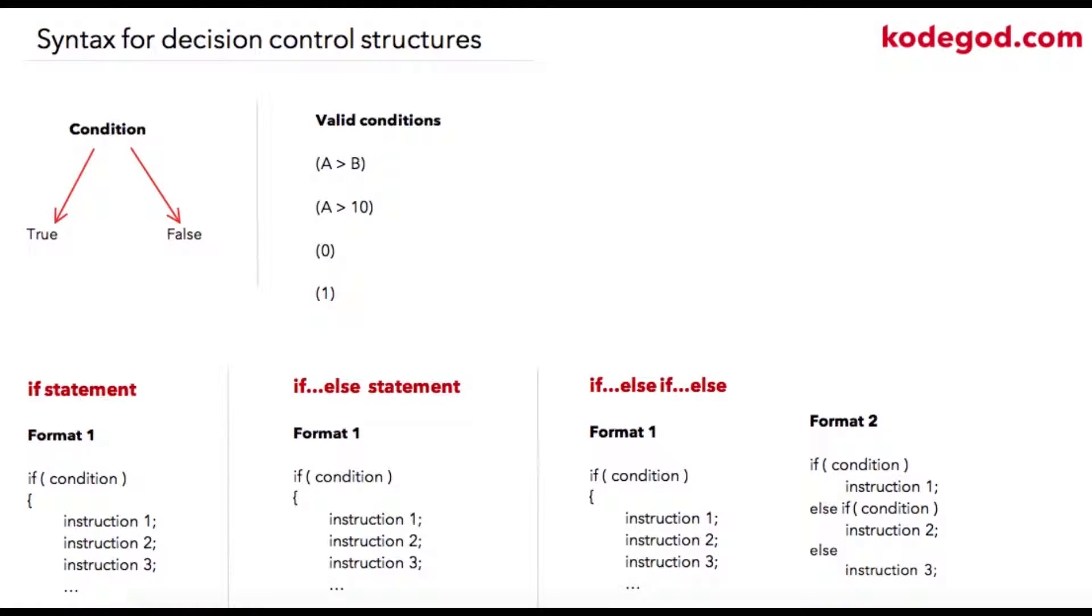In this lecture we are going to check syntax for decision control structures. As we have seen, all decision control structures will have a condition associated with it, so every condition will hold a result which can be evaluated to either true or false. These are a few valid conditions: A greater than B, A greater than 10, 0, and 1.